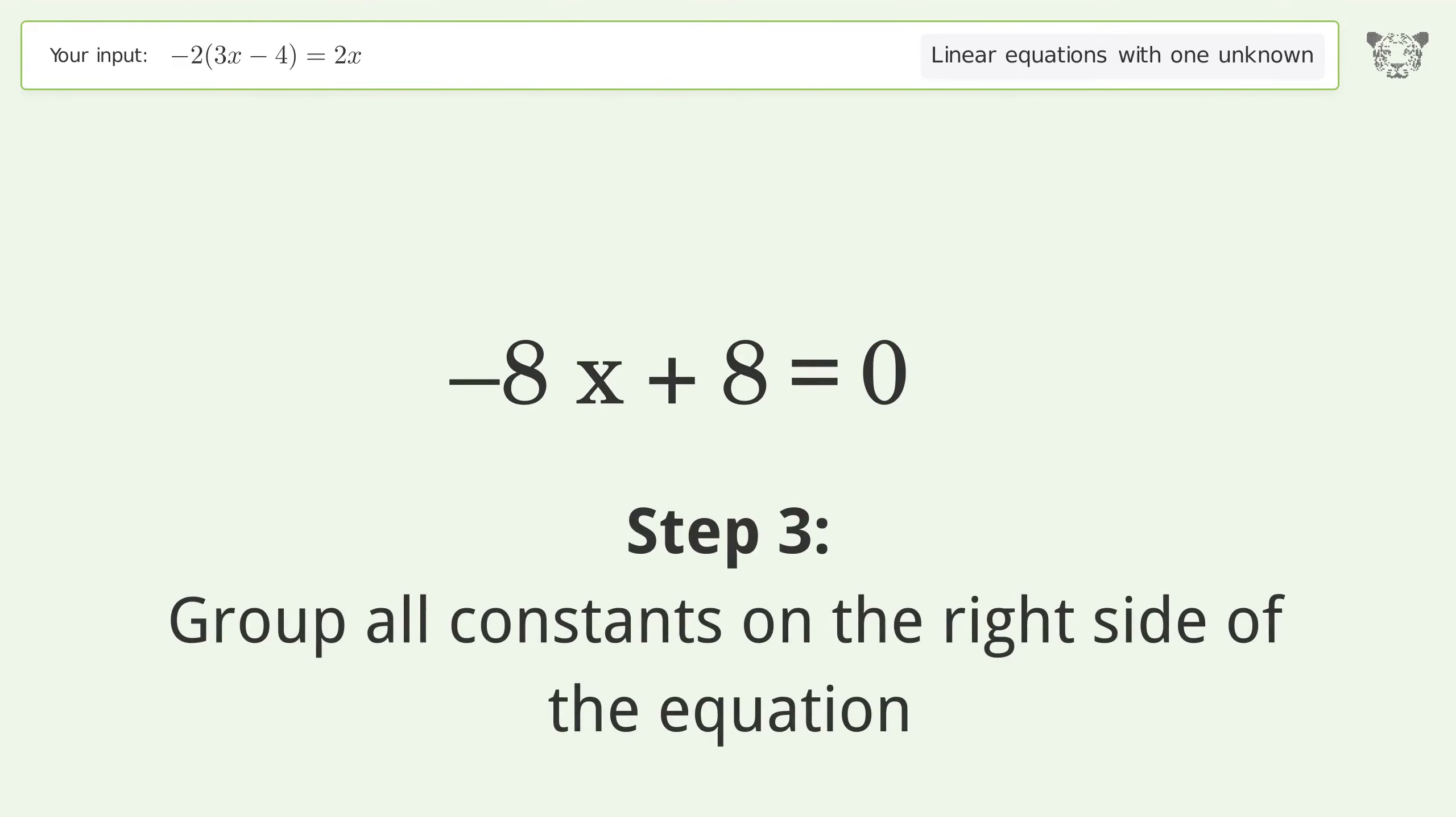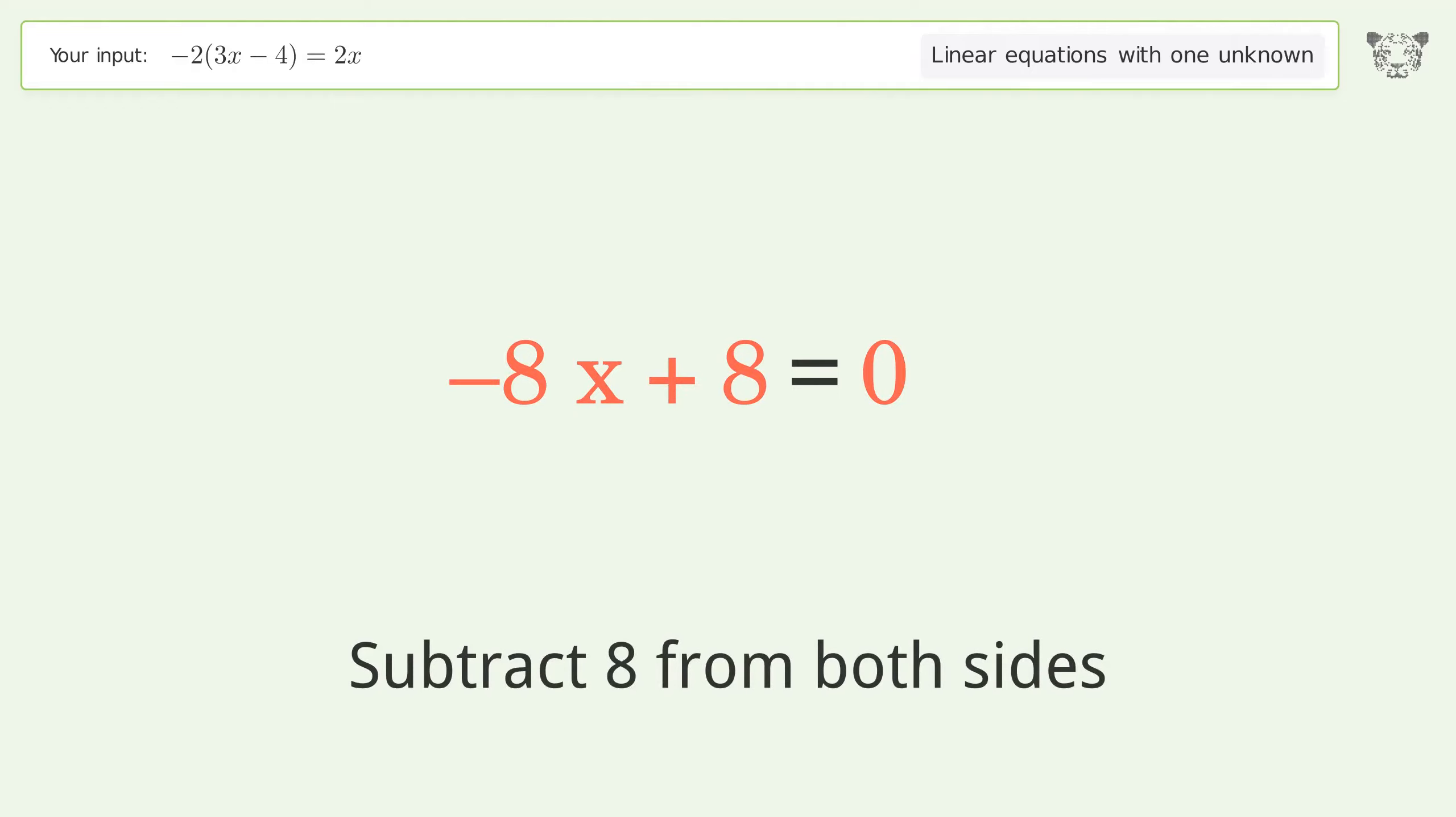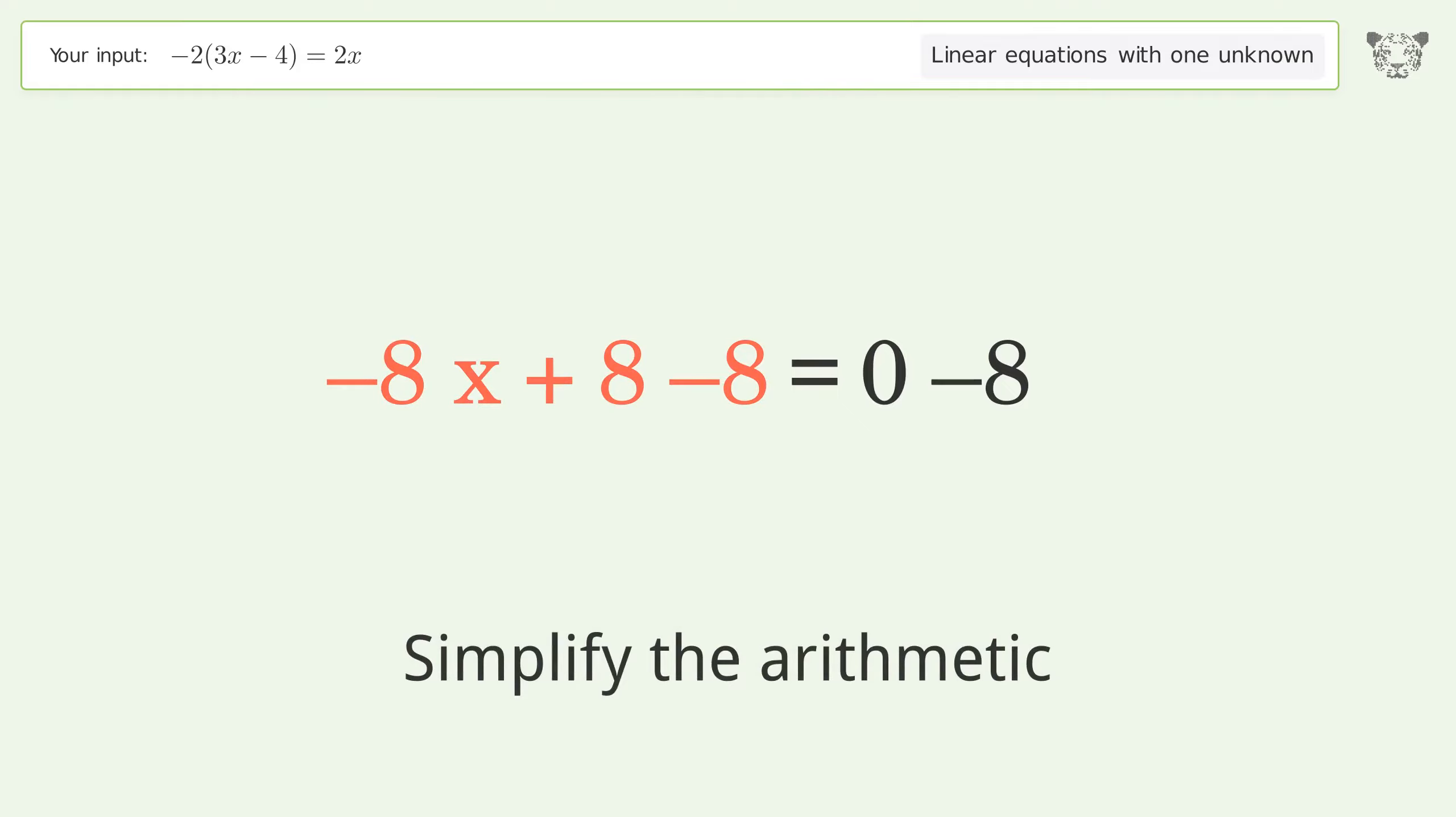Group all constants on the right side of the equation. Subtract 8 from both sides. Simplify the arithmetic.